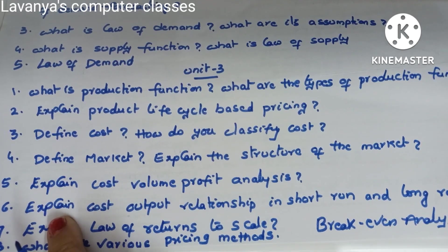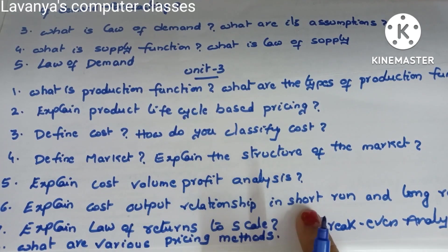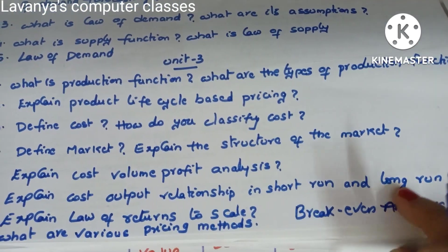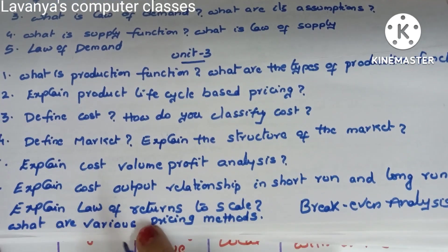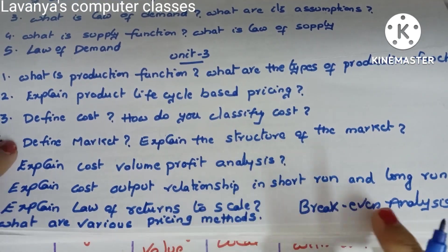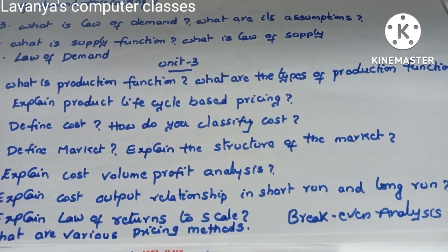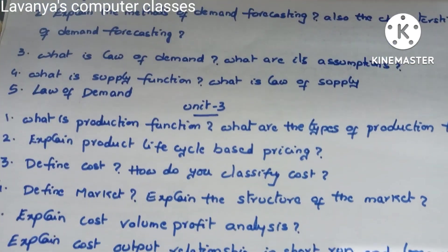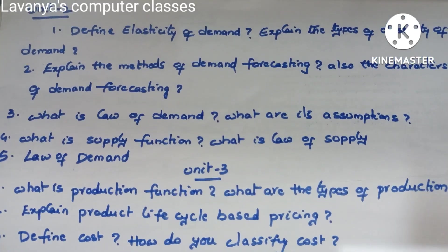Next: explain cost-volume-profit analysis. Sixth: explain cost-output relationship in short run and long run — also an important question. Explain the law of returns to scale. What are the various pricing methods? And a very very important question: what is break-even analysis? These are all the important questions in unit two and unit three. Read well.